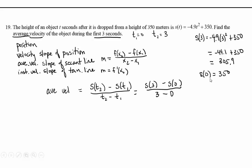So we're going to subtract 305.9 minus 350 and divide by three, the amount of time that has passed. Three minus zero is three, so it ends up being -14.7.